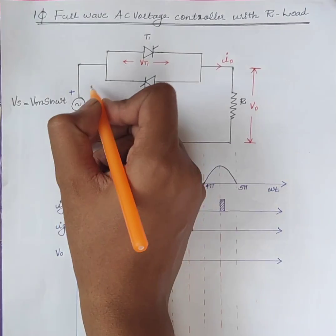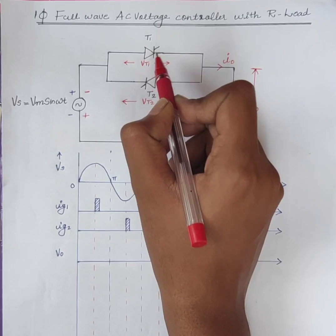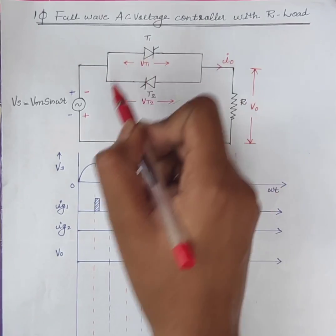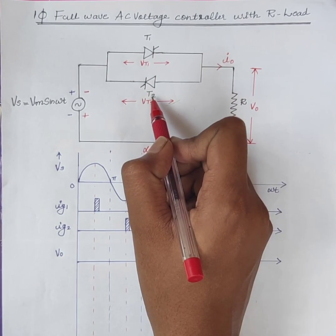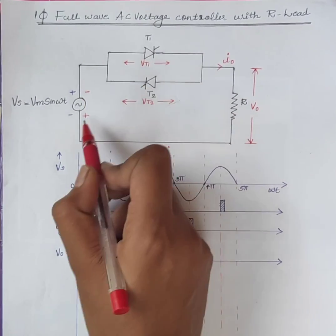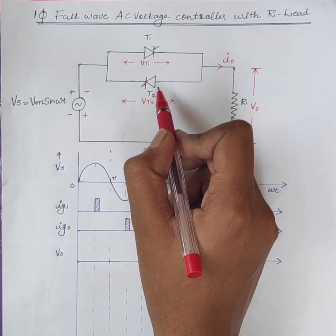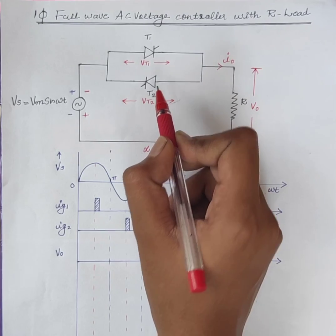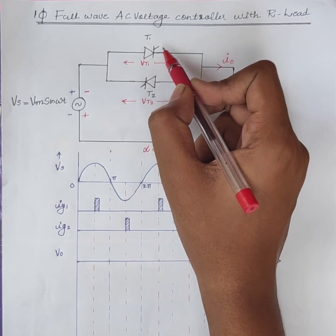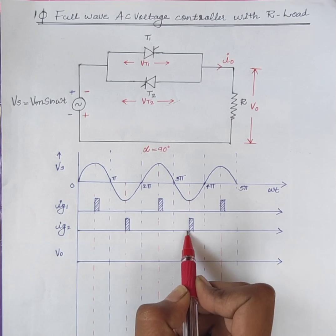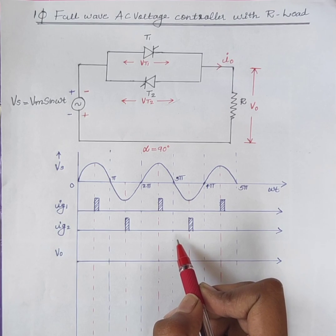During the negative half cycle, in case of T1, anode is connected to negative and cathode is connected to positive. Therefore, T1 is reverse biased. In case of T2, cathode is connected to positive and anode is connected to negative. Therefore, T2 is forward biased. So we can say that during the negative half cycle, T2 is always forward biased and T1 is reverse biased. Therefore, firing pulses are given to T2 during the negative half cycles.